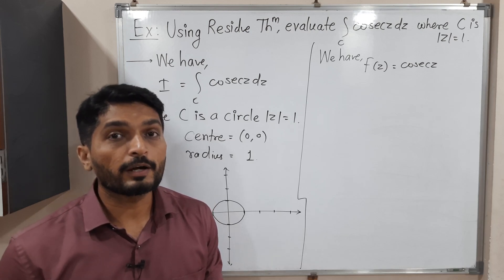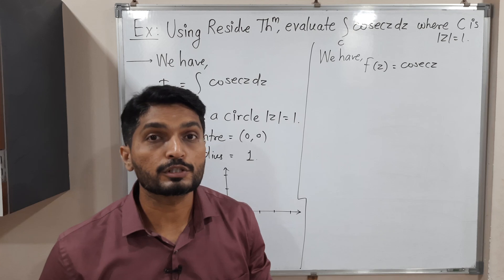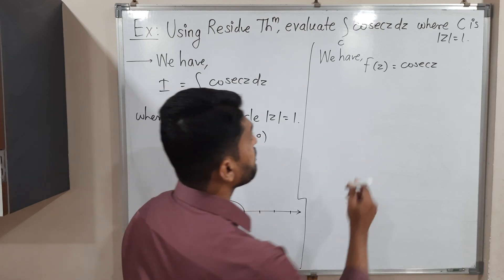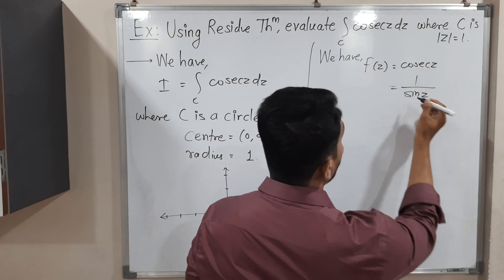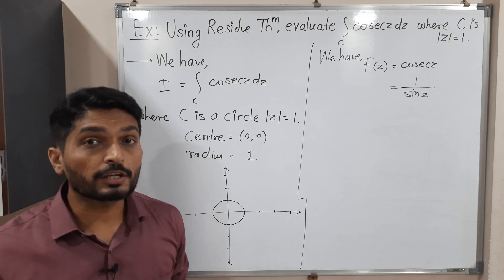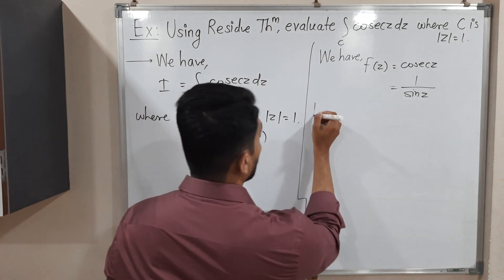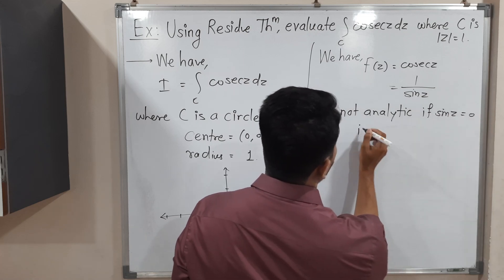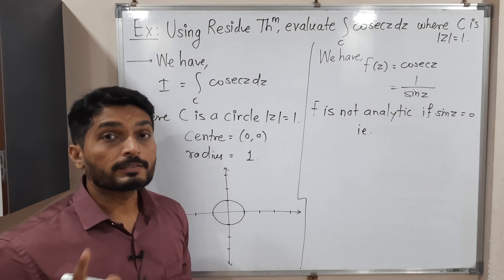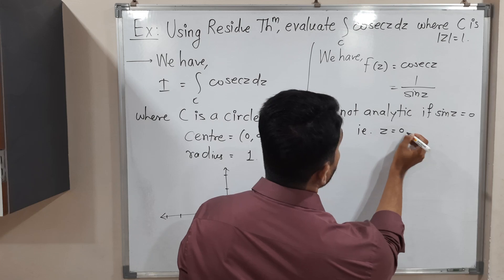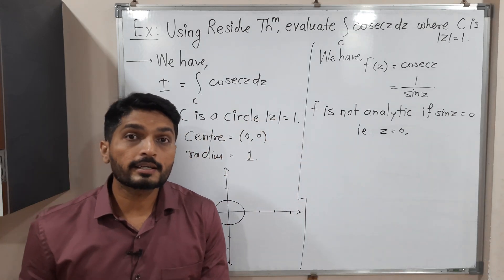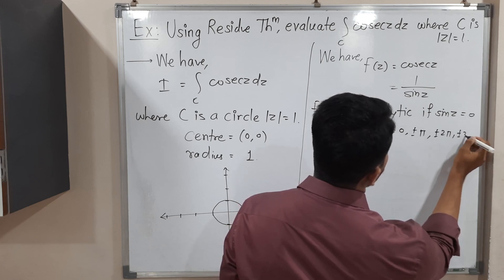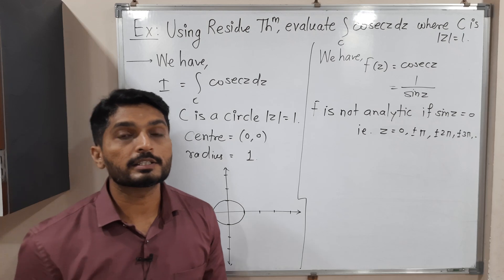According to Cauchy's residue theorem, we first find the singular points of the function — the points where the denominator is zero. The given function has no explicit denominator, but cosec(z) = 1/sin(z), so the denominator is sin(z). We check for what values of z sin(z) = 0. When z = 0, sin(0) = 0. When z = π, sin(π) = 0; similarly for z = −π. The next points are ±2π, ±3π, and so on — there are infinitely many singular points.